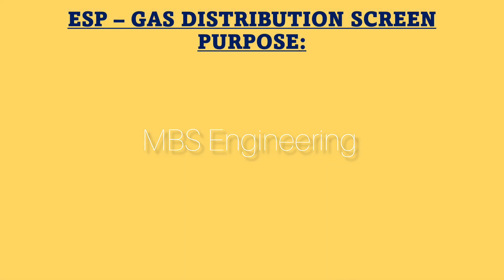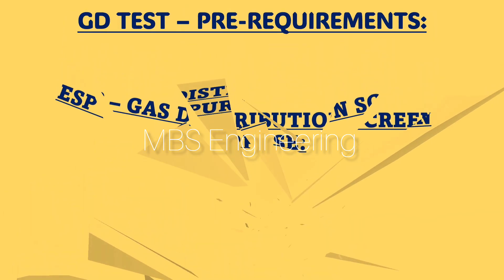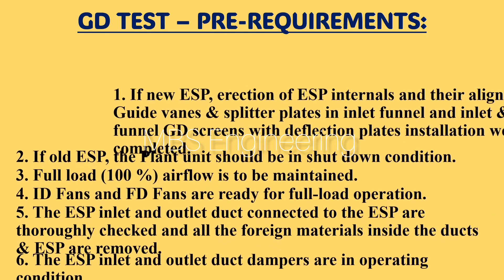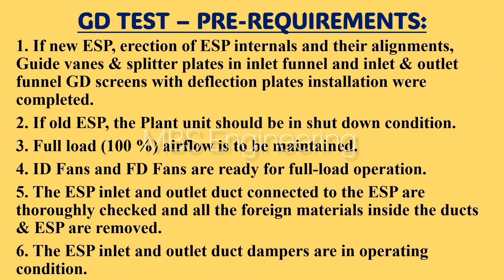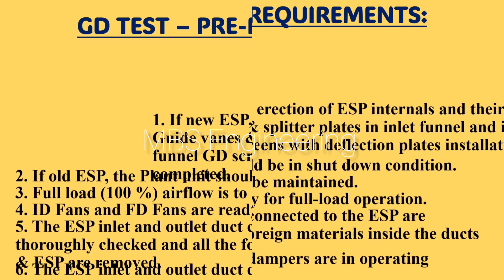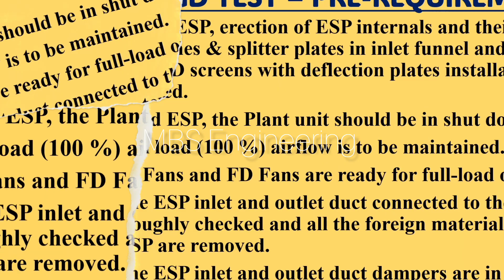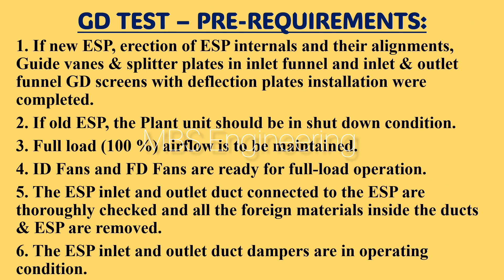Now let's discuss the pre-requirements for the gas distribution (GD) test. Point 1: for a new ESP, erection of ESP internals and their alignments — guide vanes, splitter plates in inlet funnel, and inlet and outlet funnel GD screens with deflection plates — installation must be completed. Point 2: for an old ESP, the plant unit should be in shutdown condition.